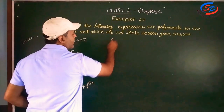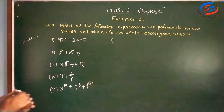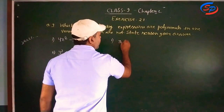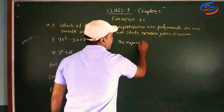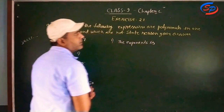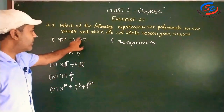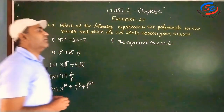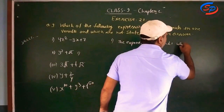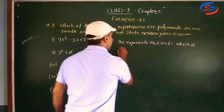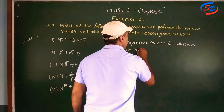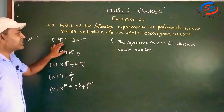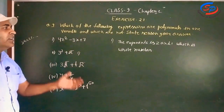So what do we write for the first question? The exponents are 2 and 1, which are whole numbers. Here x is the only variable, so there is only one variable in this expression.